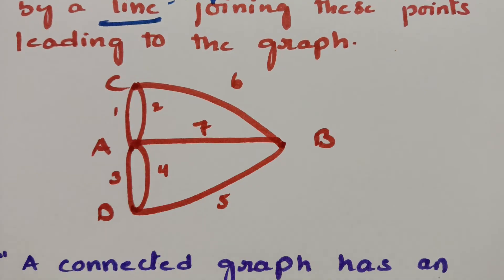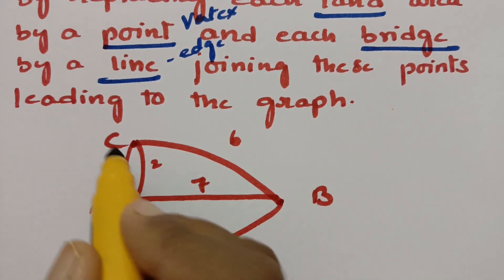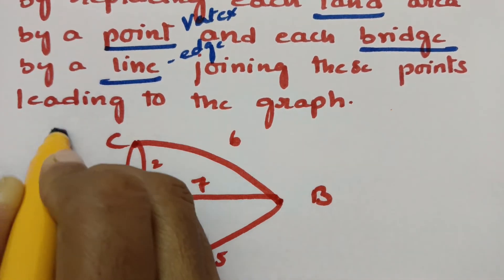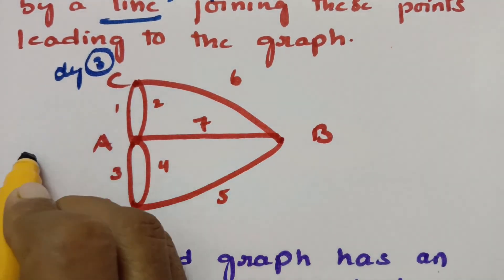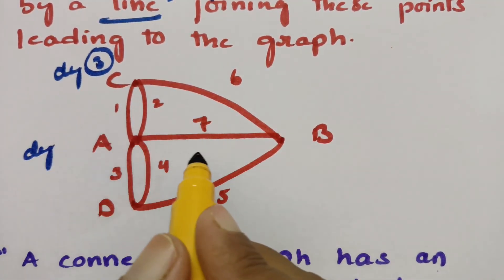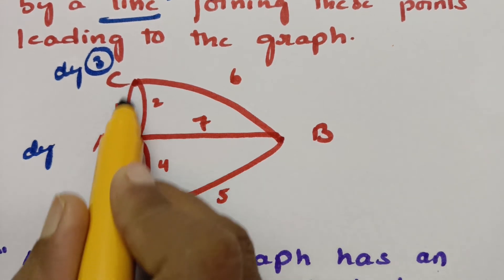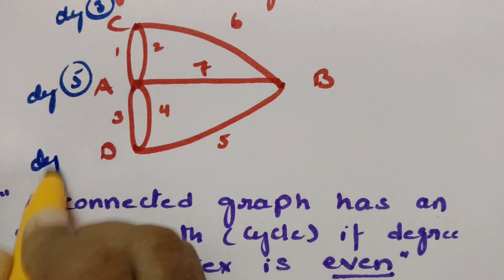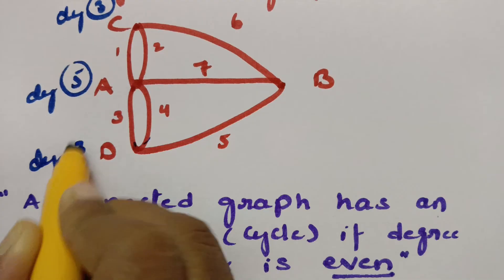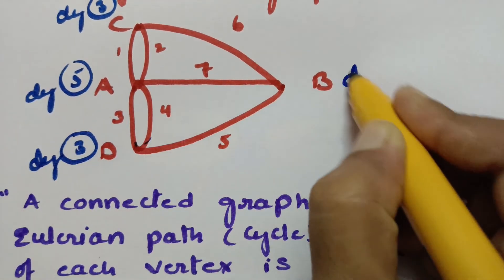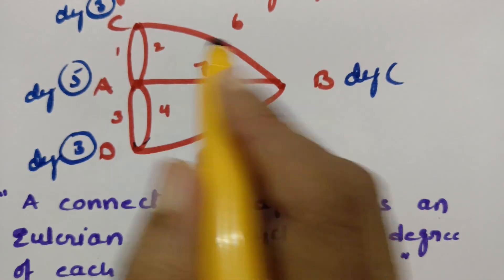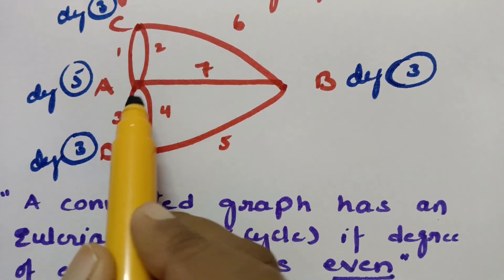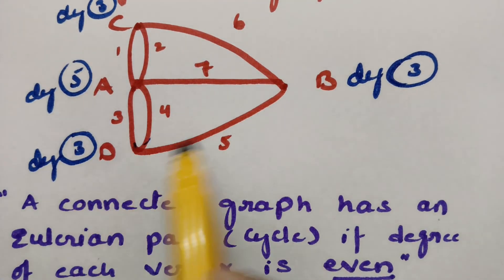Now applying graph theory: the degree of vertex C is 3 (three edges). The degree of vertex A is 5 (five edges). The degree of vertex D is 3 (three edges). The degree of vertex B is 3 (three edges). So all four vertices have odd degree.